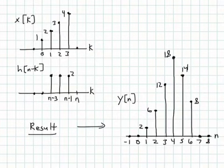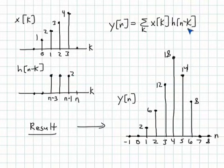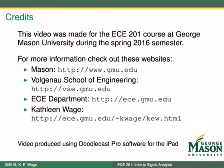What I'm fundamentally doing is implementing y of n equal to the sum over k of x of k times h of n minus k. I take this flipped and shifted version of h, move it along for each value of n, multiply the two sequences together, and add up the points. This is the final answer, arrived at through a step-by-step procedure. Hopefully you now have a better understanding of discrete time convolution and can implement some on your own. I encourage you to give it some practice. Thanks for listening.